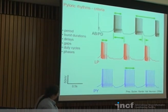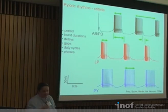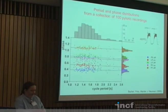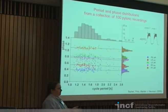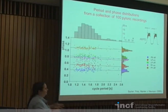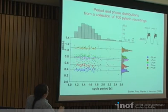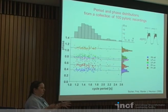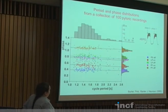Dirk Bucher, a postdoc at Eve Marder's lab who now has his own lab in Florida, did the painstaking work of going back through a hundred old recordings from the lab — baseline recordings taken before any manipulation — and extracted the biological range for each of these 15 criteria. This created an experimental database that was published, providing means and standard deviations for period, burst duration, and so on.